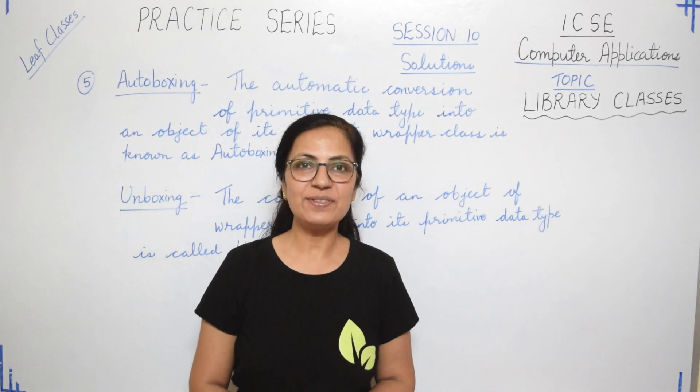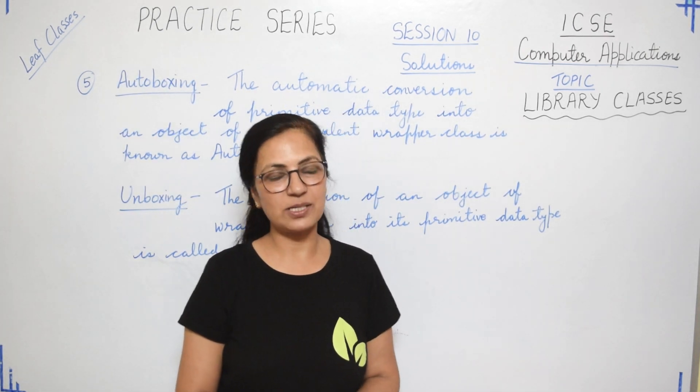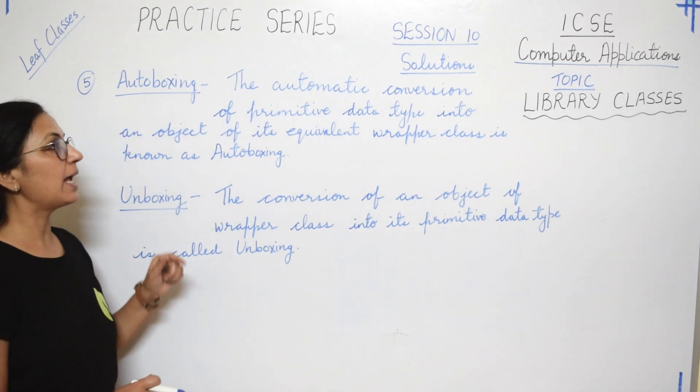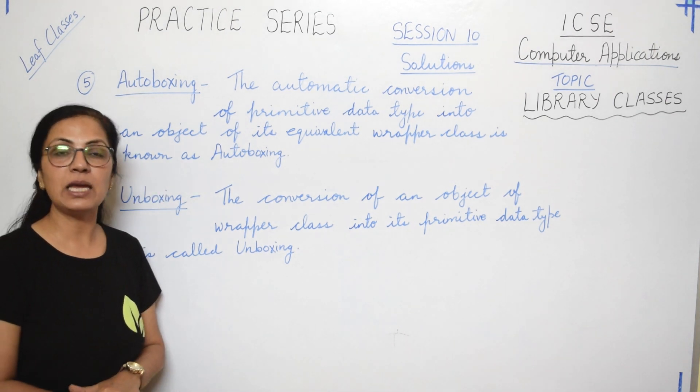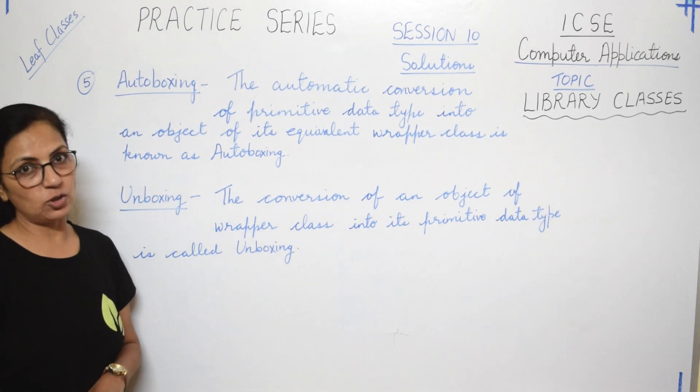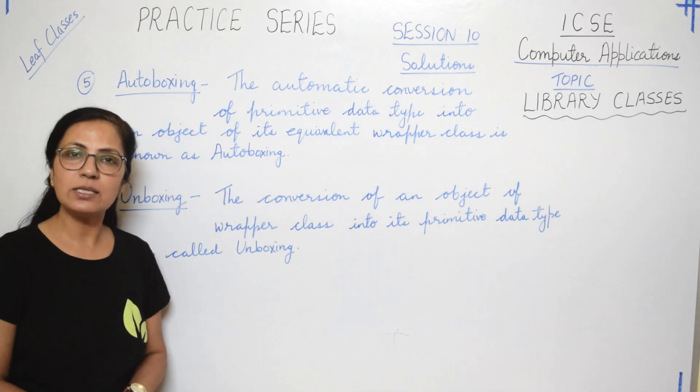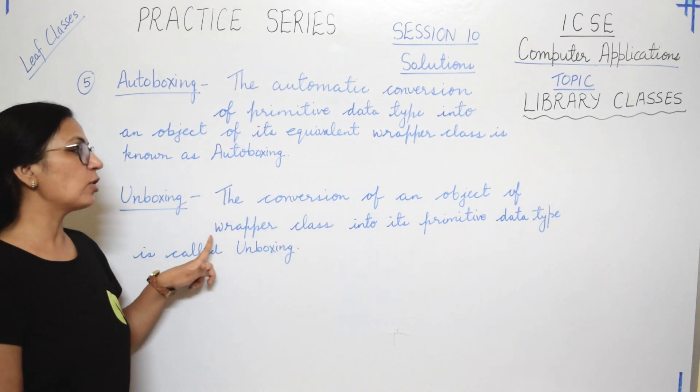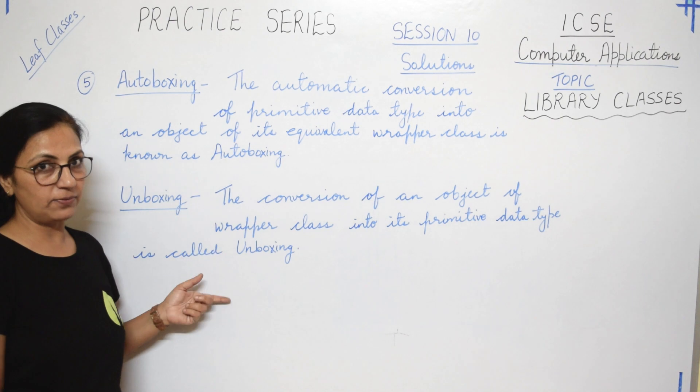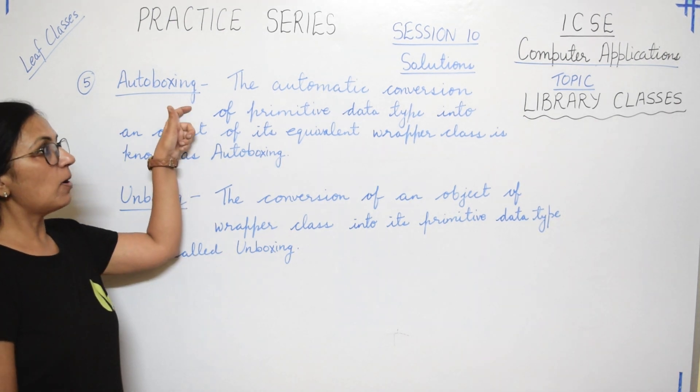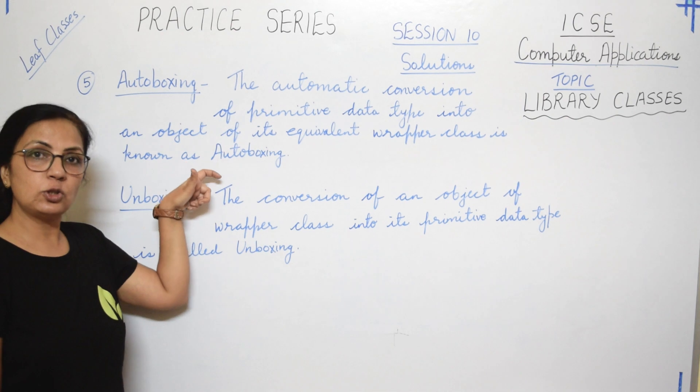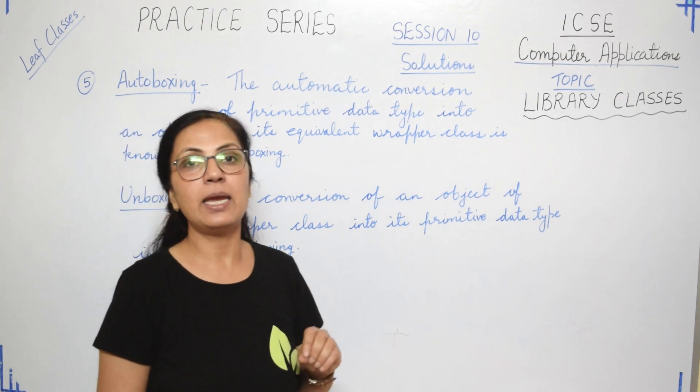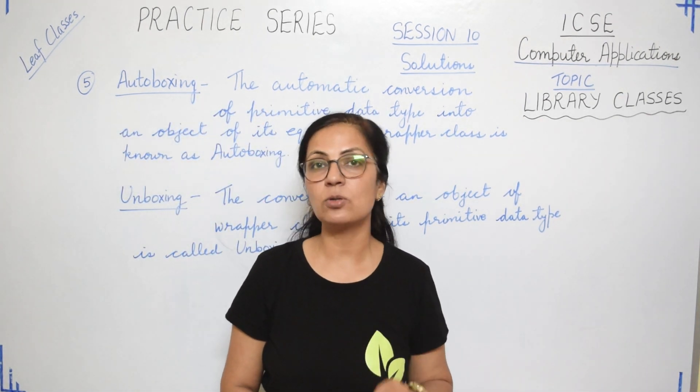Question number five says: define auto-boxing. Auto-boxing is automatic conversion of primitive data type into an object of its equivalent wrapper class. And unboxing is just reverse of this. Unboxing means to convert an object of wrapper class to its primitive data type. So auto-boxing: primitive to wrapper, and unboxing: wrapper to primitive. Again here I would like to suggest you that please go to Library Classes Video One for the details of this topic.